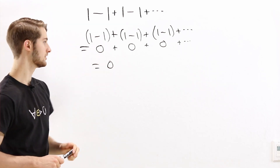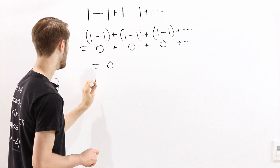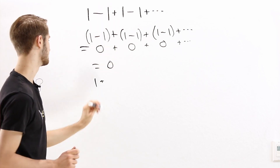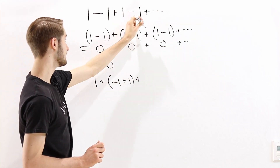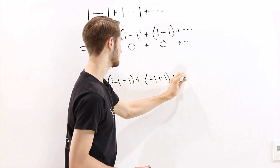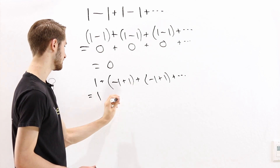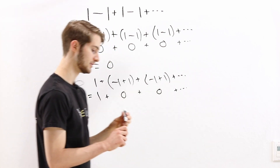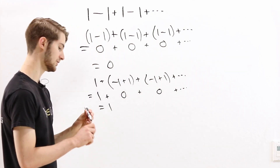Now there is another way that we could group the terms. What I am going to do is put the first 1 here by itself. So we will have a 1 out here. And after this 1 there is a minus 1 plus 1, so we could group those two together. And after that there is another minus 1 plus 1, and we can keep doing that to infinity. This 1 stays as just a 1, but then after that, minus 1 plus 1 is just 0, and then plus 0, and then plus 0 and so on. So now we have 1 plus a bunch of zeros, and that is going to leave us with just the value of 1.